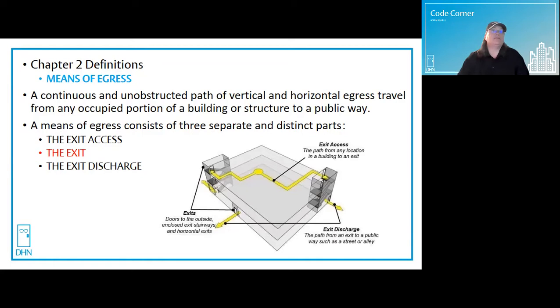In Chapter 2, the definition of means of egress is a continuous and unobstructed path of both vertical and horizontal egress travel from any occupied portion of a building or structure to a public way. A means of egress consists of three separate and distinct parts.